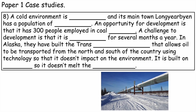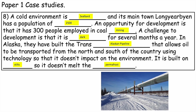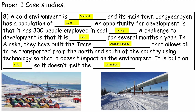Number eight: a cold environment is Svalbard, and its main town Longyearbyen has a population of two and a half thousand people. An opportunity for development is that it has 300 people employed in coal mining. A challenge to development is that it is dark for several months a year — this is referred to as polar night. In Alaska, another cold environment, they have built the Trans-Alaskan Pipeline that allows oil to be transported from the north to the south using technology that doesn't impact the environment — it is built on stilts so it doesn't melt the permafrost. Crude oil is around 45 to 50 degrees Celsius. There's a lovely picture of Longyearbyen in Svalbard.